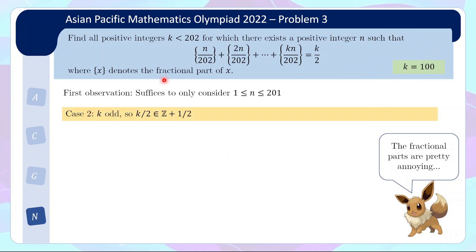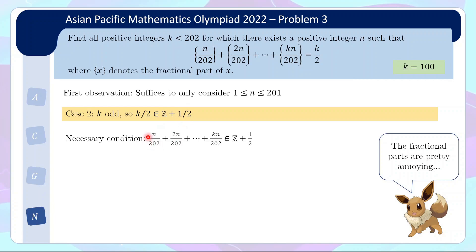Now for k odd, k over 2 is an integer plus a half, so the right-hand side is an integer plus a half. If we remove the fractional symbols, each term increases by an integer, so the left-hand side is still an integer plus a half. Multiplying throughout by 2 to eliminate the plus-half, we need the sum of all terms multiplied by 2 to be an odd integer.